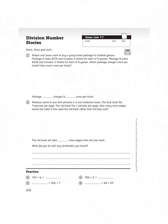It says, solve, show your work. Short and to the point, I like it. Let's read problem number one. Robert and Jason want to buy a group ticket package for football games. Package A costs $276 and includes two tickets for each of six games. Package B costs $336 and includes two tickets for each of eight games. Which package charges more per ticket? How much more per ticket?